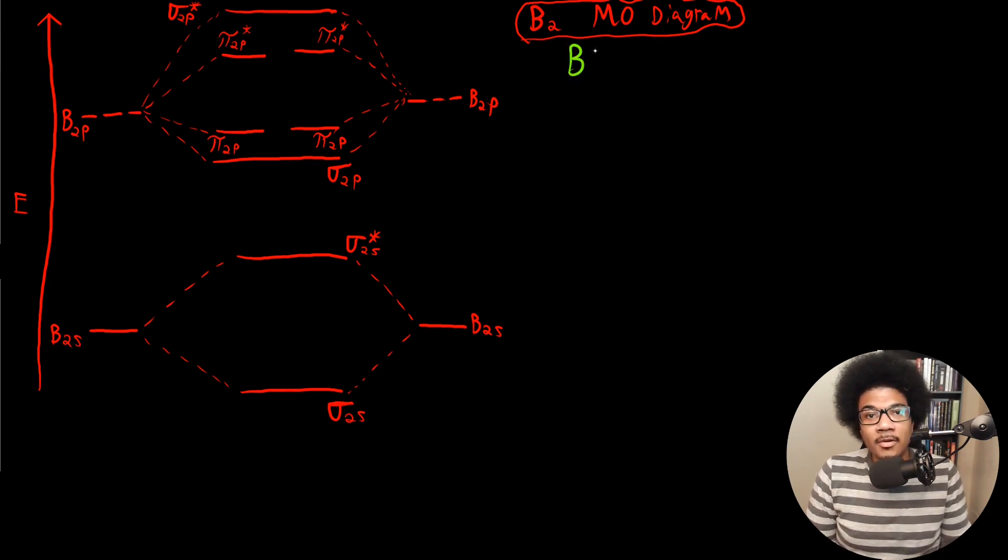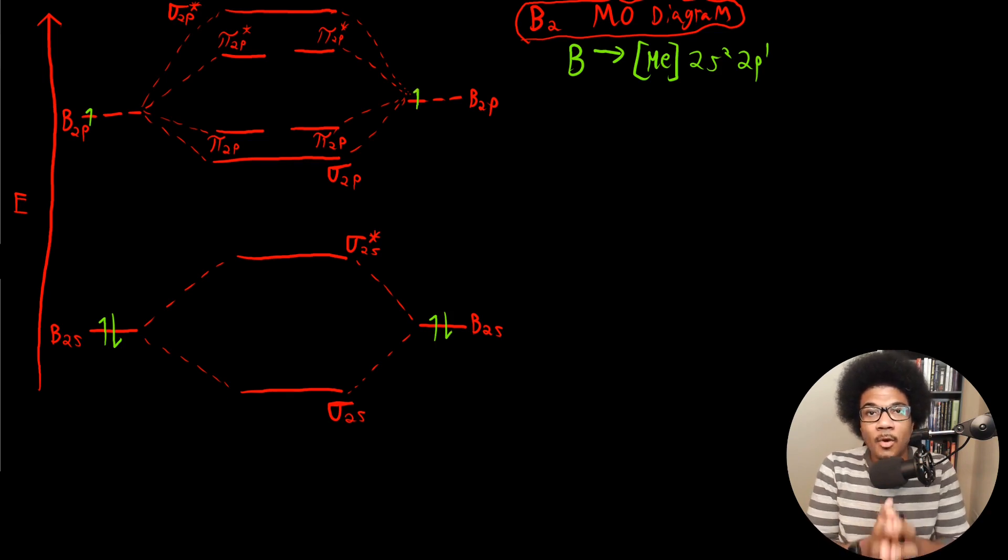So for boron, its electron configuration is helium 2S2 2P1. So we got three electrons in both of these free atoms, so we'll fill these guys in here. We got three electrons on both sides. So that means for our molecular orbital diagram, we are going to have to fill in six electrons in the MO diagram.